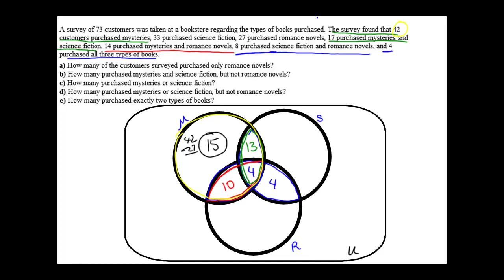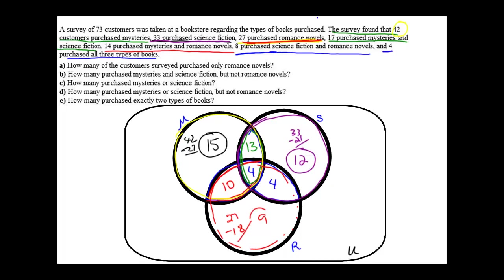I'll do the same thing with 33 purchased science fiction — this purple circle needs to contain a total of 33. Right now we've got 13, 4, and 4, which is 21 total. So 33 minus 21 leaves me with 12. Then for romance novels, 27 purchased. Right now I have a total of 18 in this circle, so 27 minus 18 leaves me with 9 for that region.